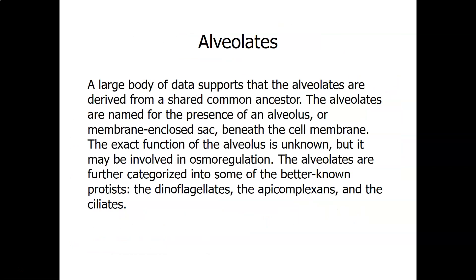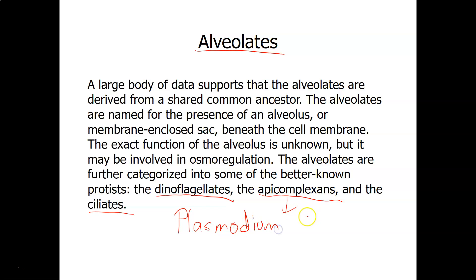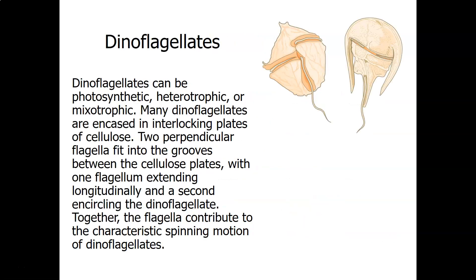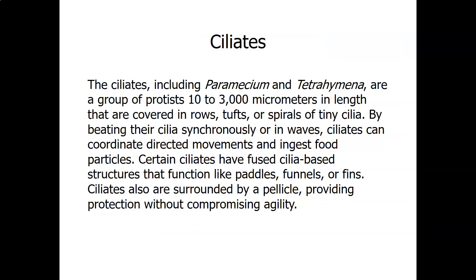From the alveolates, we covered dinoflagellates and will discuss ciliates next. I also want to mention the apicomplexans — one example is Plasmodium falciparum, the protozoan that causes malaria. It has a two-host life cycle: a human host and a mosquito host. Malaria is especially common in Africa.